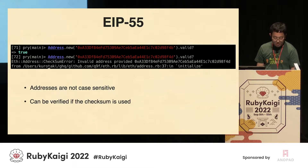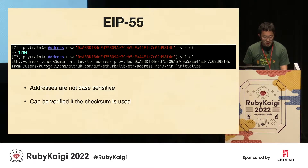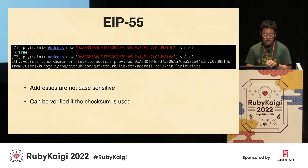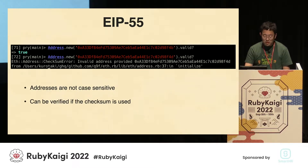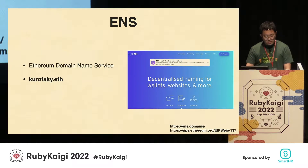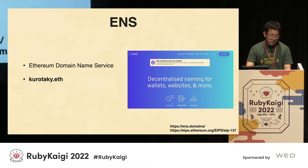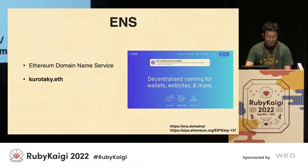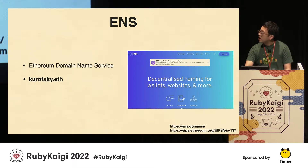Here is my Ethereum address starting with 0xA33. If I made a typing mistake, it can be detected. The last letter B is valid, but the last letter D is invalid. Recently, there is ENS which was proposed in EIP-137 in 2016. ENS is something that more and more people are using these days. You may have seen names like 'kurotaky.eth' on the internet.